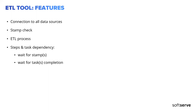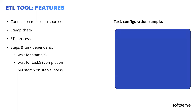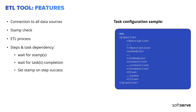Let's check an ETL task configuration example. It's a regular XML file with sections covering the description, scheduling, rules, connections, and flow inside.